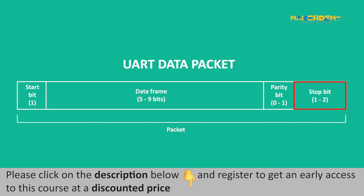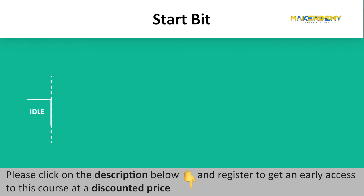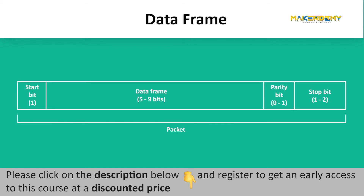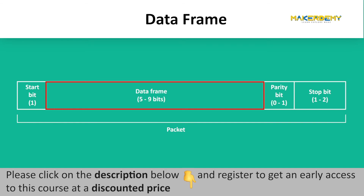And one or two stop bits. Start bit: the UART data transmission is by default held at a high logic when no data is being transmitted. The UART pulls the logic from high to low for one clock cycle to start data transfer. When the receiver detects a low logic, it starts reading the bits in the data frame. Data frame: the actual data to be transmitted is contained in the data frame, and it can be from 5 bits to 8 bits long if no parity is used.